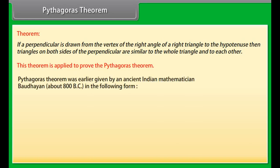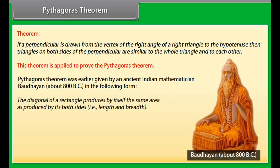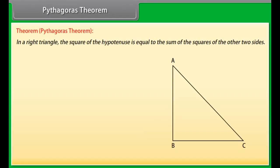Pythagoras theorem was earlier given by an ancient Indian mathematician Baudhayan, around 800 BC, in the form: the diagonal of a rectangle produces by itself the same area as produced by its both sides (length and breadth). This is sometimes referred to as the Baudhayan theorem. Statement: In a right triangle, the square of the hypotenuse is equal to the sum of the squares of the other two sides.